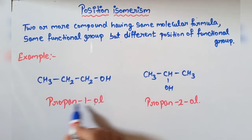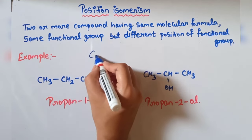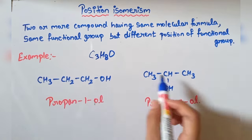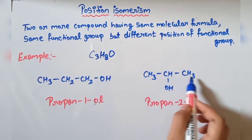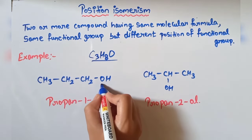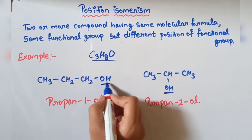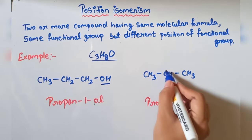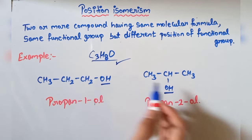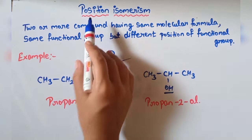See the example — here we have two compounds: first is propan-1-ol and second is propan-2-ol. For the first compound: three carbons, C3H8O. For the second compound: also three carbons, also C3H8O — molecular formula is the same. The functional group is also the same: OH, that is alcohol, in both compounds. But the position of the functional group is different — in the first compound OH is on the first carbon, and in the second compound OH is on the second carbon. So this isomerism is called position isomerism.